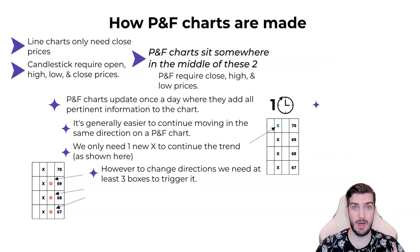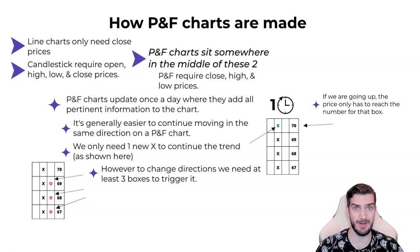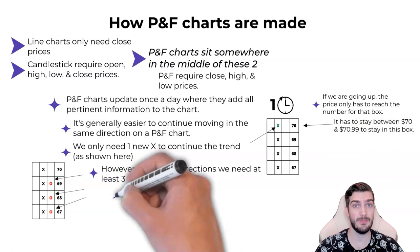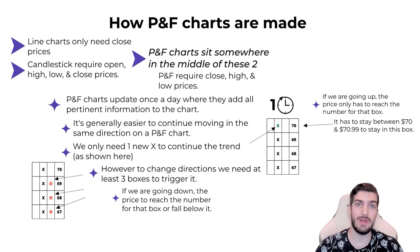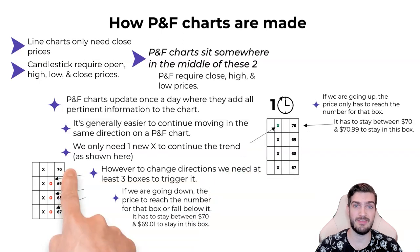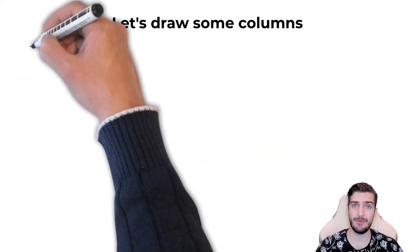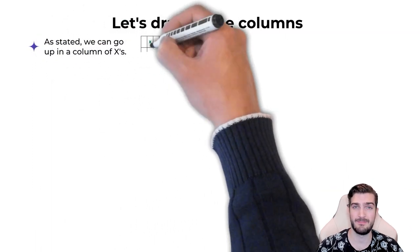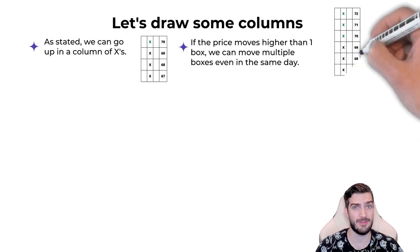When going up in a column of X's, to enter a new box the price just needs to reach or exceed the price listed in that box. So if a box says $70, the price only needs to be at $70 up to $71 to fill that box. However, if we are in a column of O's, the price needs to be at that level or lower to fill the box — so that same $70 box would need the price to be $70 or less. We can add multiple boxes in the same day if the price moves enough.